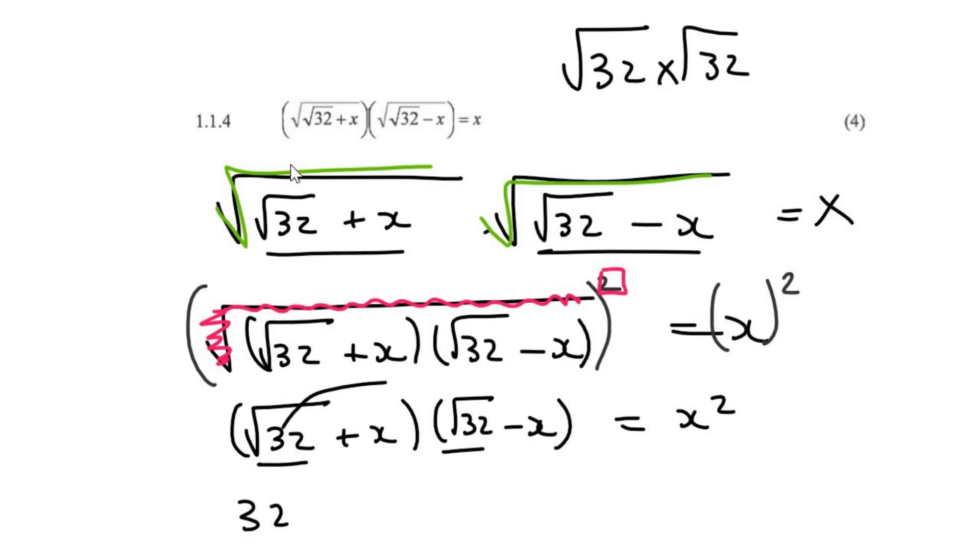I'm then going to multiply those, and that's going to give me minus x square root 32. Then I'm going to multiply these two, and that's going to give me x square root 32. And then lastly, those two. So that's going to be negative x squared is equal to x squared.